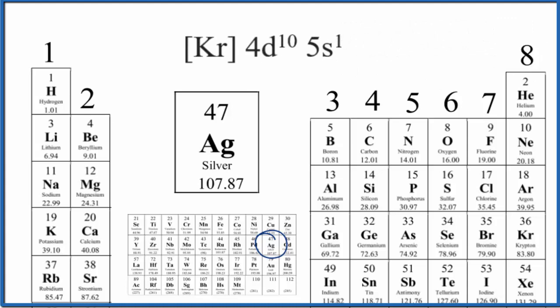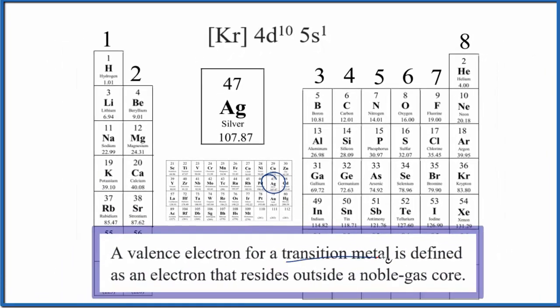When we talk about transition metals, this is a kind of general definition of what we mean by valence electrons. If you have a transition metal, the valence electrons, those are the electrons that reside outside that noble gas core. This is our noble gas core right here. So we actually have 11 valence electrons here according to this definition.